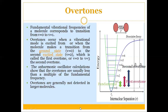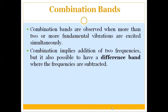Another type of band observed in the IR spectrum is combination bands. Combination bands are observed when two or more fundamental vibrations are excited simultaneously — you will observe the addition of two or three vibrational frequencies. It is also possible to have a difference band, where two frequencies are subtracted from each other.